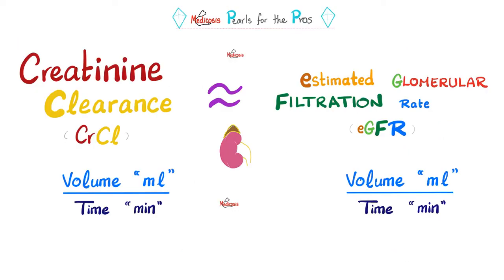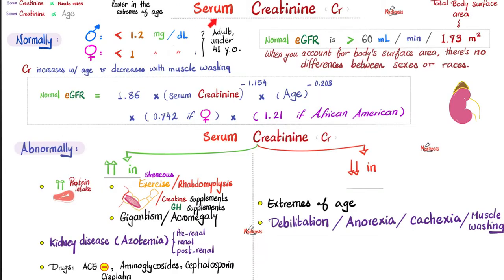We can use creatinine clearance to estimate your glomerular filtration rate and kidney function. Serum creatinine, what's the normal? Less than 1.2 mg per deciliter in males. In females, it should be less than 1. Males should have higher serum creatinine because they have more muscle mass on average. As you grow older, your serum creatinine increases. So serum creatinine increases with age but decreases with muscle wasting.